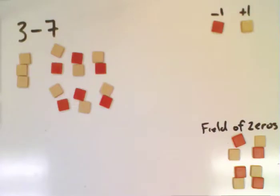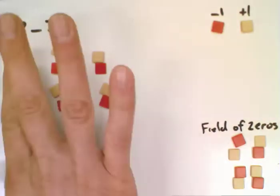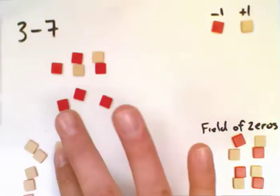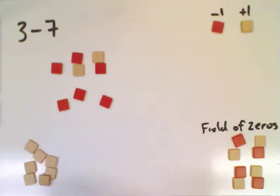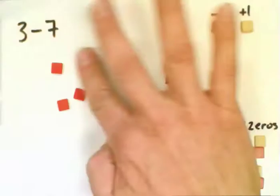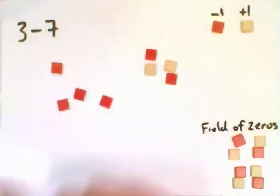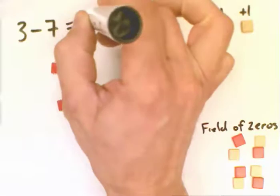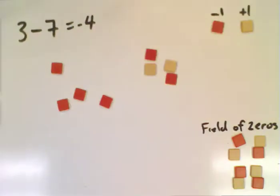So I've added 6 zeros here. And now I can subtract 7. And so from there, I can take, there's 3, 4, 5, 6, 7 that I've removed from there. And so I can remove those. And here's what I have left. Well, I have this zero I can get rid of. I have this zero that I can get rid of. And what I have left is the negative 4. So now when we use the zeros from our field of zeros, we can actually bring in as many as we need so that we can actually subtract what is needed to be subtracted.